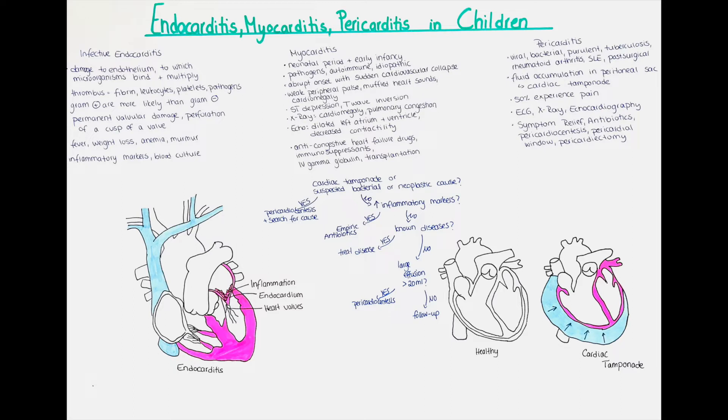The colonization of different parts of the heart can bring long-term problems. Especially staphylococci is known to cause permanent valvular damage such as a perforation of the cusp of a valve or a rupture of the chordae tendineae. Also an embolization of the thrombus is possible, which can travel to either the pulmonary or systemic circulation where it can cause an infarction, abscess or inflammation.